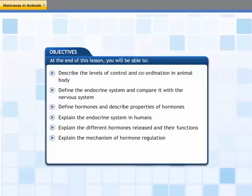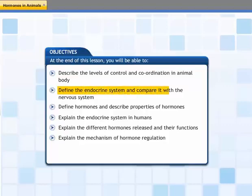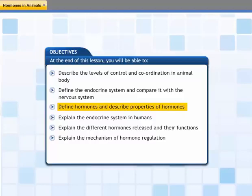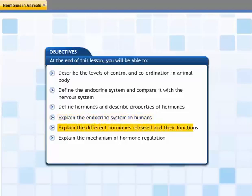In this lesson, you will learn about the endocrine system in animals. At the end of this lesson, you will be able to: describe the levels of control and coordination in the animal body; define the endocrine system and compare it with the nervous system; define hormones and describe properties of hormones; explain the endocrine system in humans; explain the different hormones released and their functions; and explain the mechanism of hormone regulation.